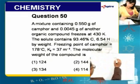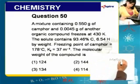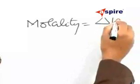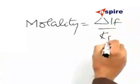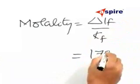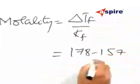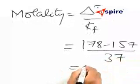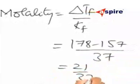First we will start with the well-known formula: molality is equal to delta Tf divided by Kf, that is in turn equal to 178 minus 157 divided by 37, and that will be 21 by 37.